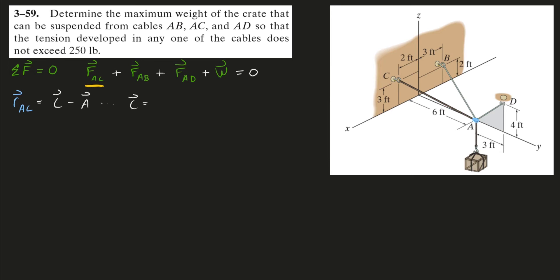The coordinates of point C are going to be 2 in the positive x, 0 in the y direction, and 3 in the positive z direction. The coordinates of A will be 0 in the x direction, 6 in the positive y direction, and 0 in the z direction. I just have to do vector C minus vector A, component by component subtraction.